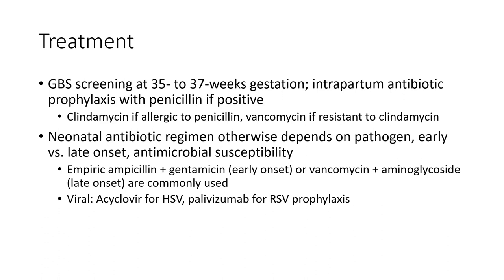Treatment. Group B strep screening at 35 to 37 weeks gestation. Intrapartum antibiotic prophylaxis with penicillin if GBS-positive. Clindamycin if allergic to penicillin. Vancomycin if resistant to clindamycin. Neonatal antibiotic regimens are based on pathogen. Early onset: empiric ampicillin plus gentamicin. Late onset: vancomycin plus aminoglycoside. Acyclovir for herpes simplex virus. Palivizumab for RSV prophylaxis.